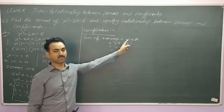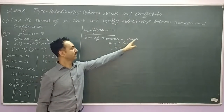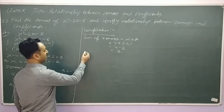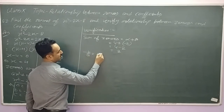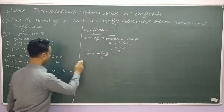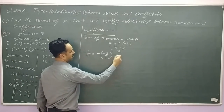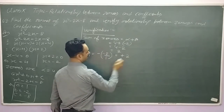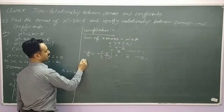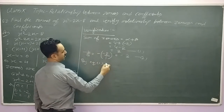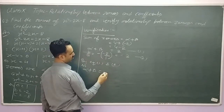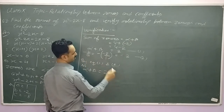Now we find the sum of zeros — this is the LHS part, alpha plus beta. Putting in values: 4 plus (minus 2) equals 2. Now we find minus b upon a, which is minus(minus 2) upon 1, equals 2. So by equations 1 and 2, alpha plus beta equals 2 equals minus b upon a. Verified.